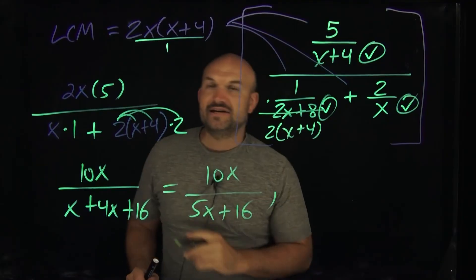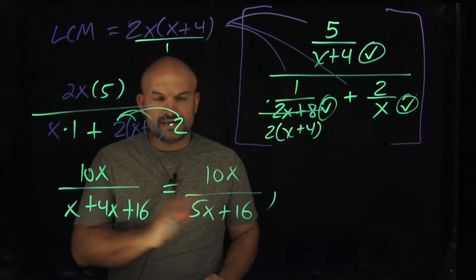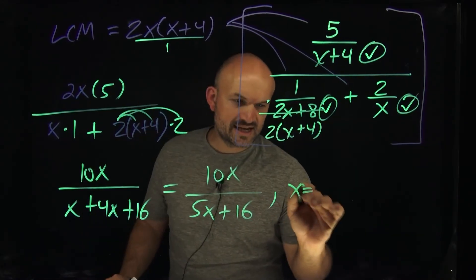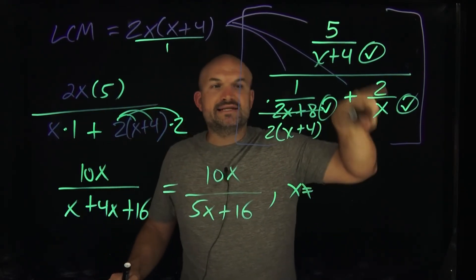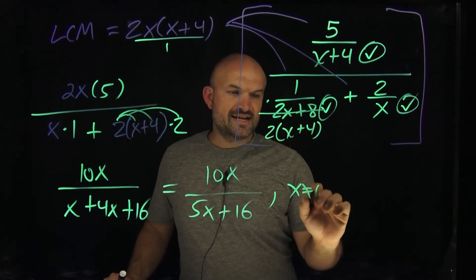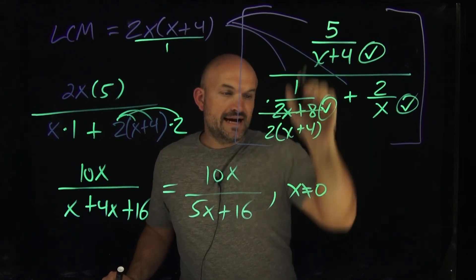And now let's go and look at our values that are going to be restricted. So when you're dealing with a complex fraction, what I always like to say is, what are the values that x cannot equal? Well, those are going to be the values that make your denominator equal to 0. So you could say x cannot equal 0, right? x cannot equal negative 4.